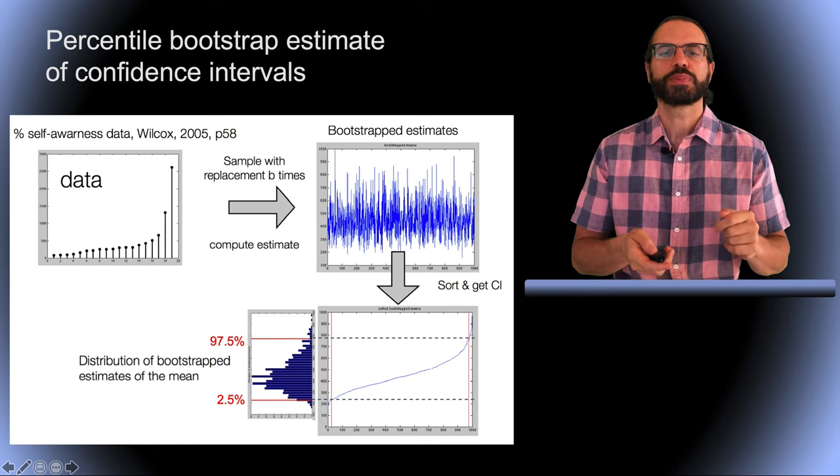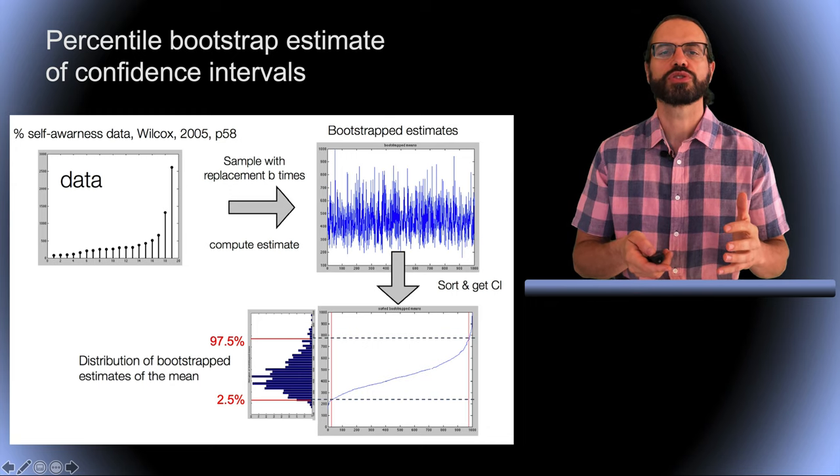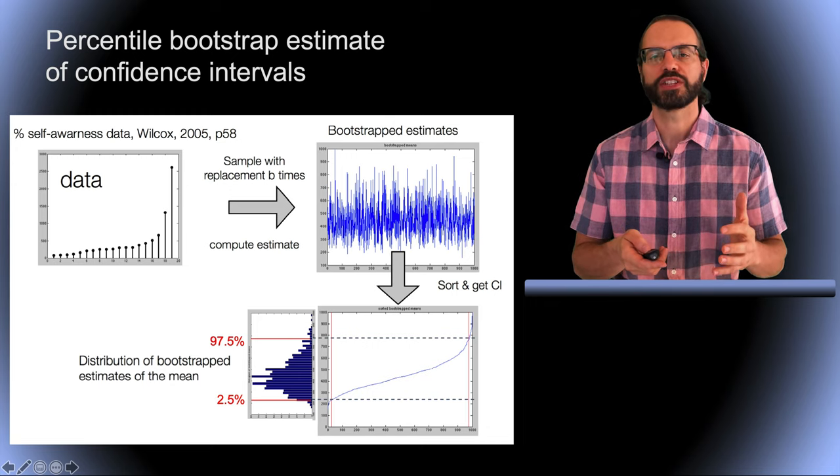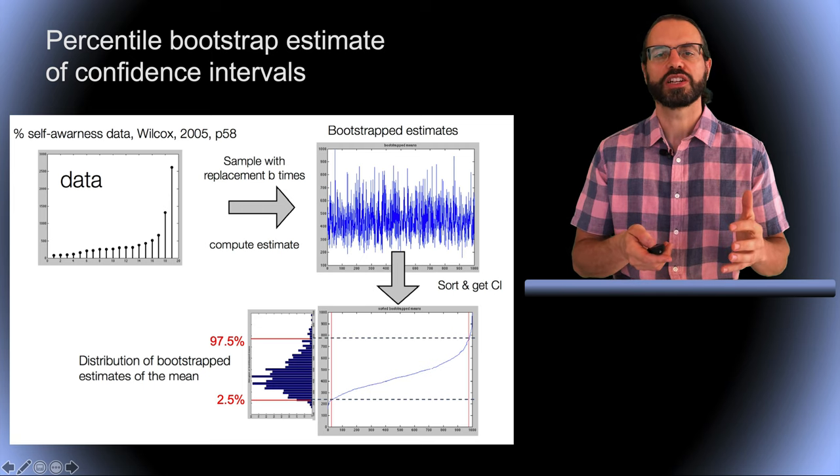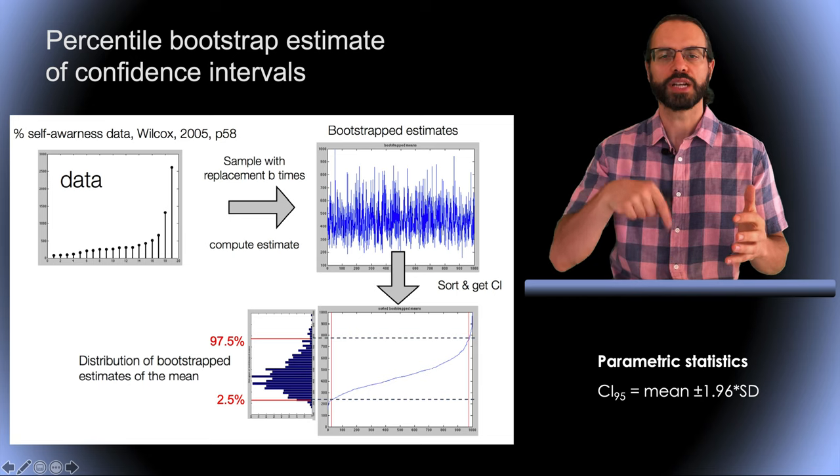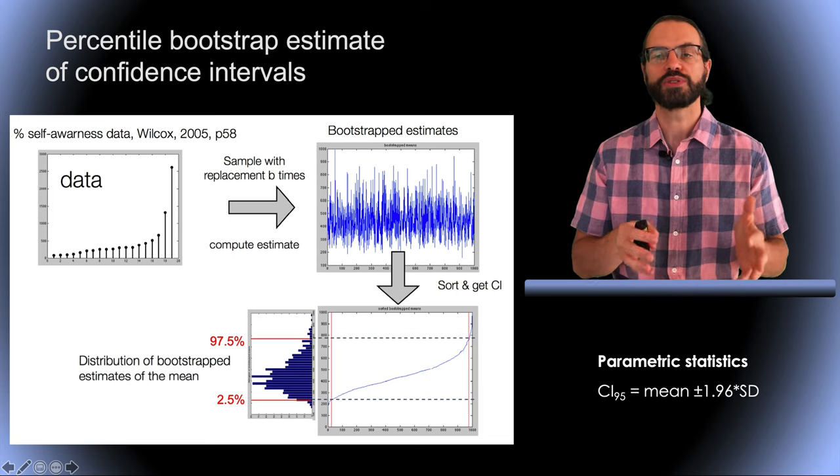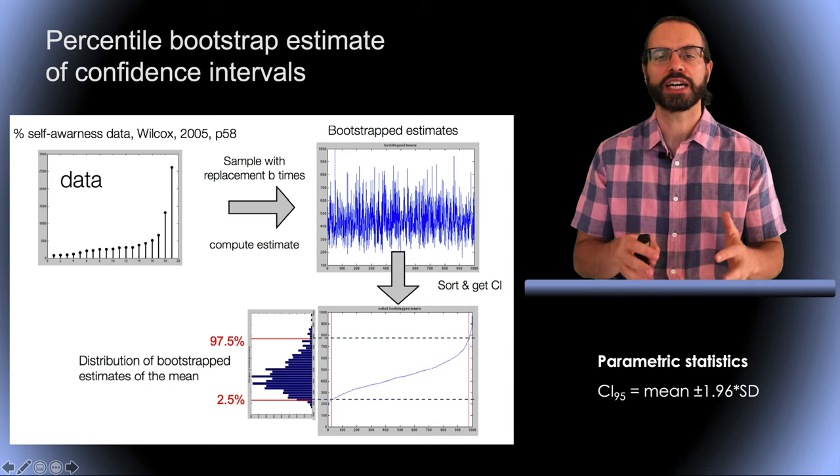Note that this is not specific to bootstrap. If you assume a Gaussian distribution of value, you could also calculate the 95% confidence interval, solely based on the mean and standard deviation of the data, and I show you the formula below. However, in this case, since the distribution of value is not Gaussian at all, it would be highly inaccurate.